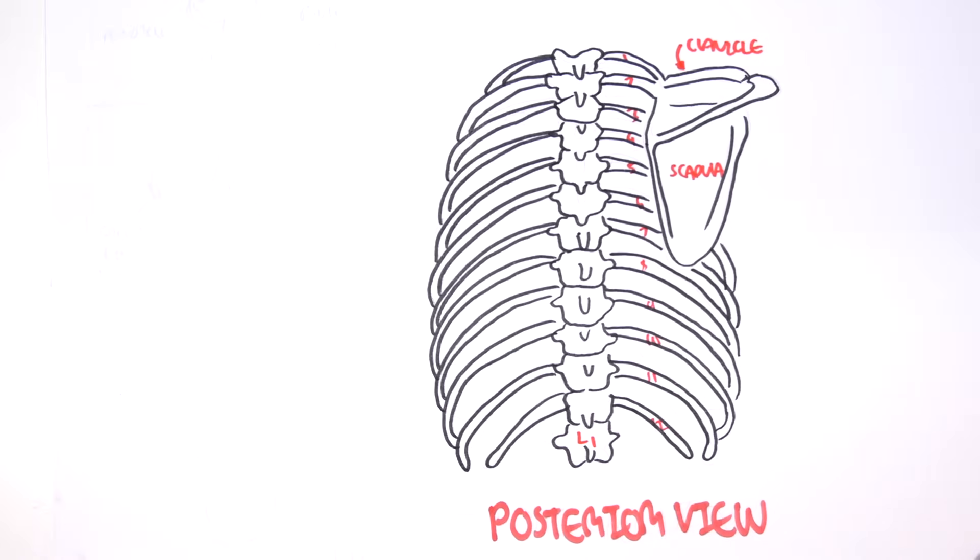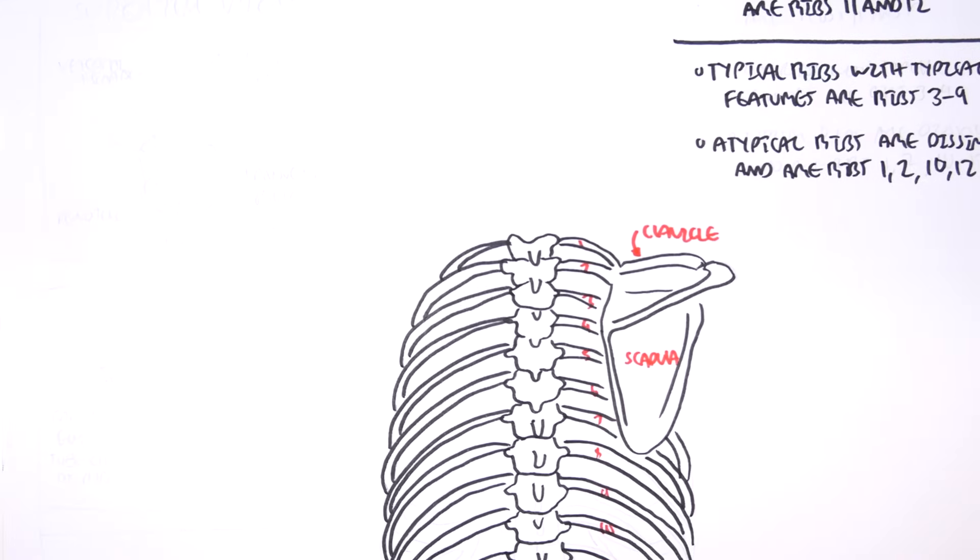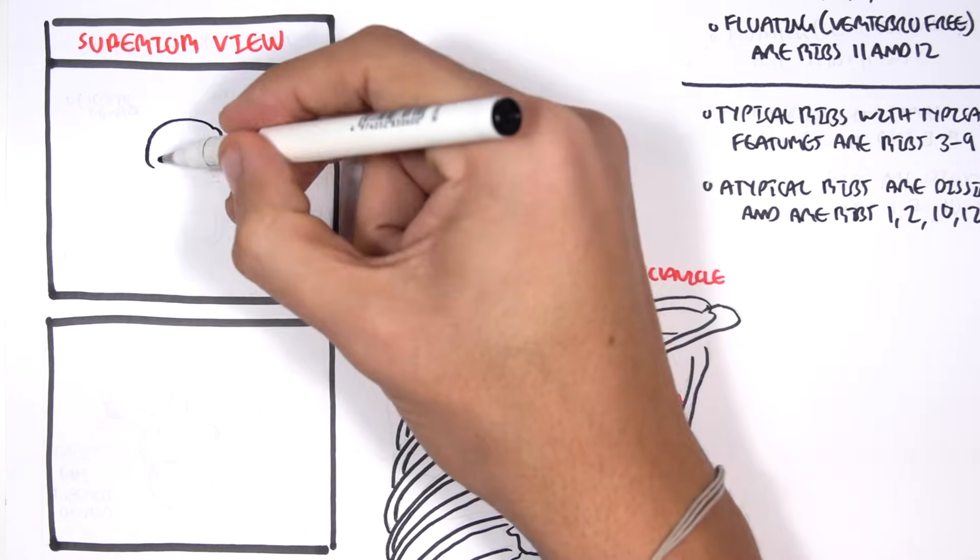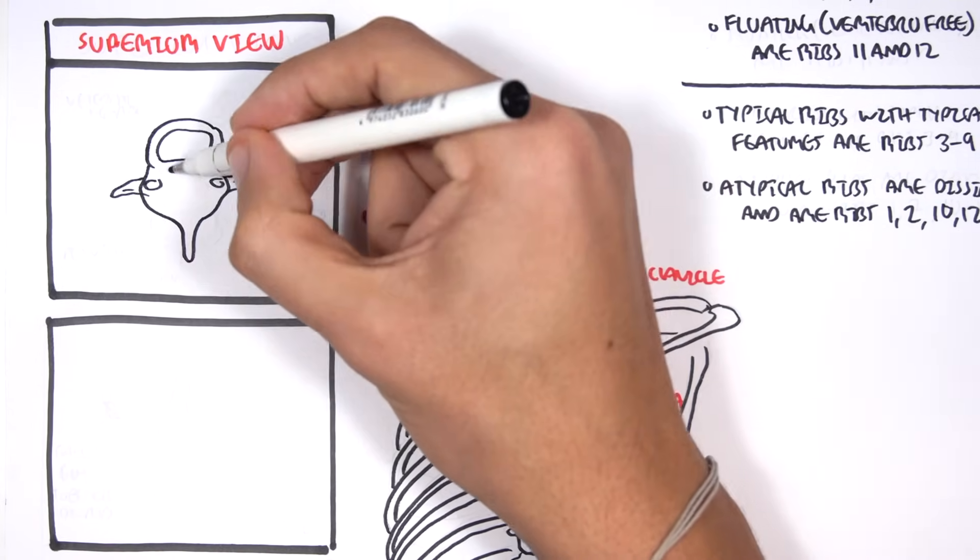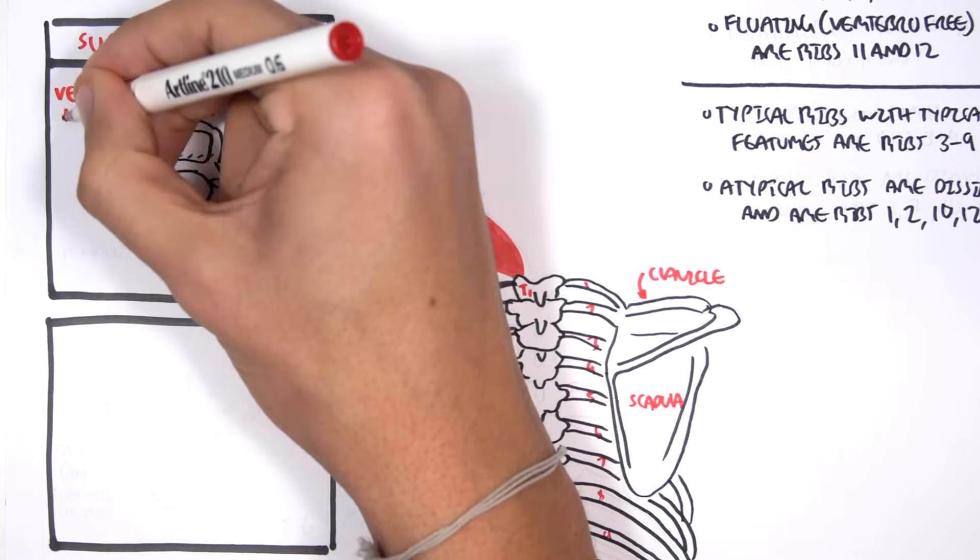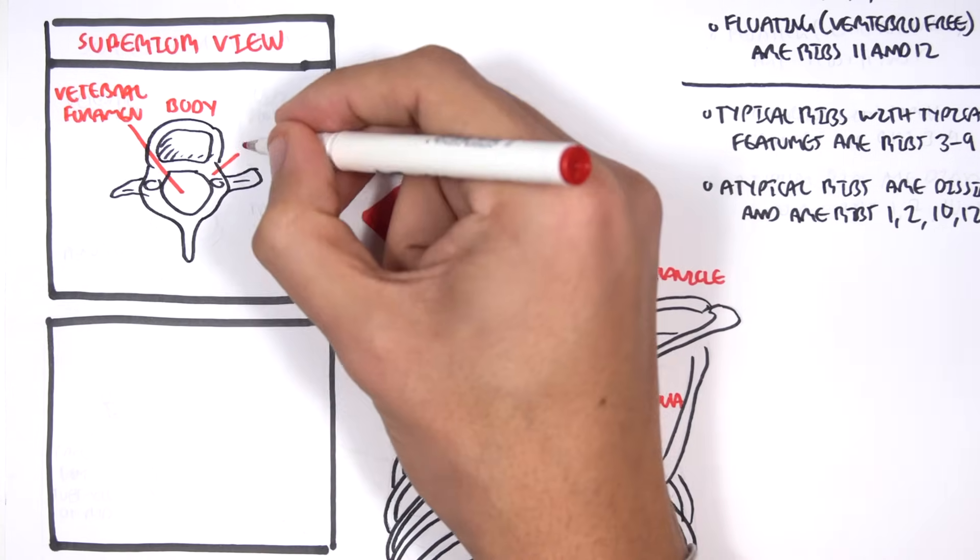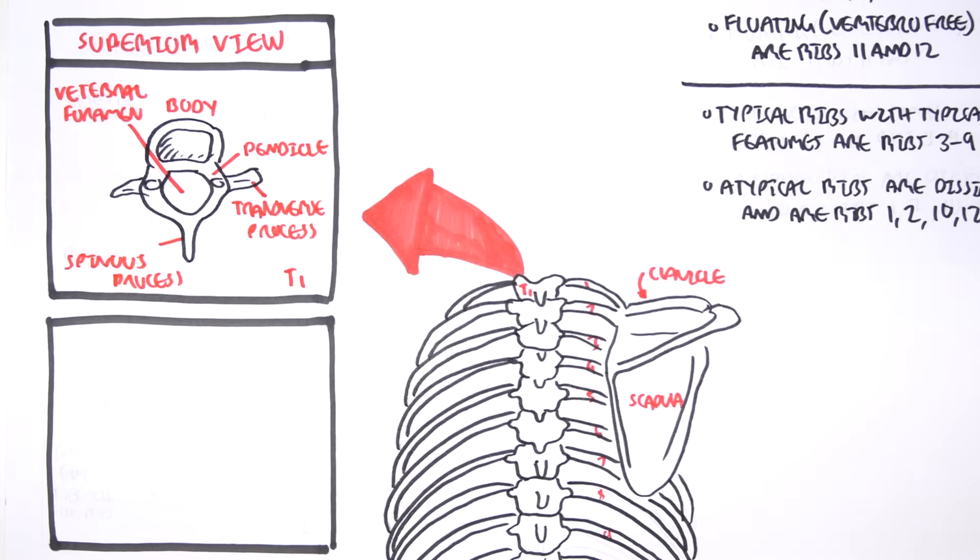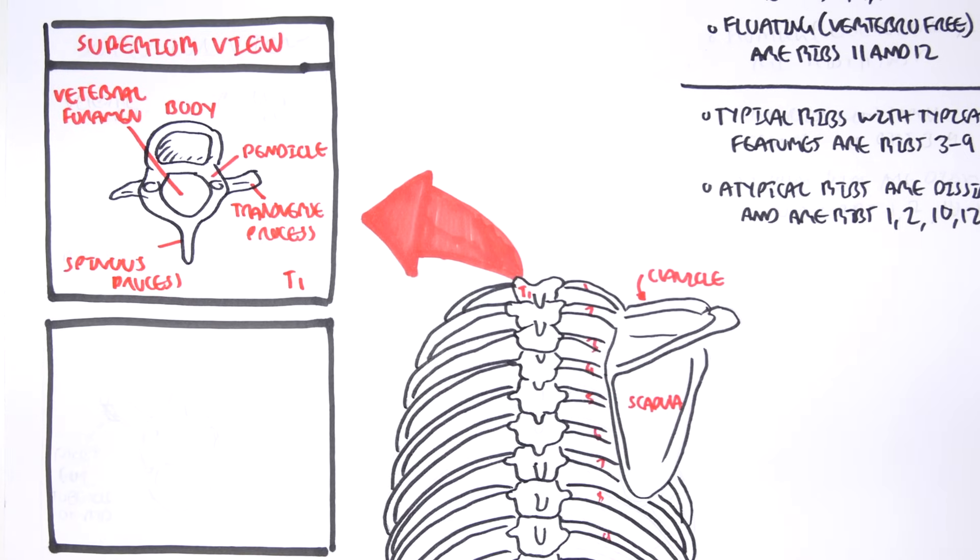Let's talk about the vertebra quickly, just for a quick recap. We are looking at a vertebra from a superior view. This is T1, and here is the body. The vertebral foramen is where the spinal cord goes through. The pedicle, we have the transverse process, and then we have the spinous process, which we can actually feel when we palpate along the spine.